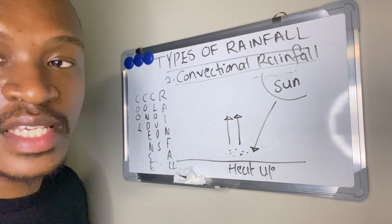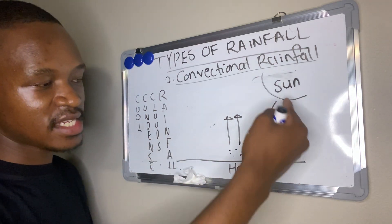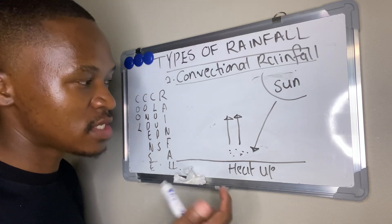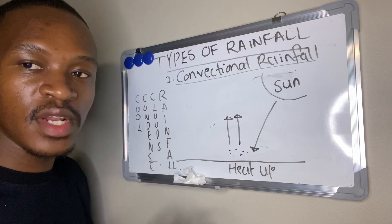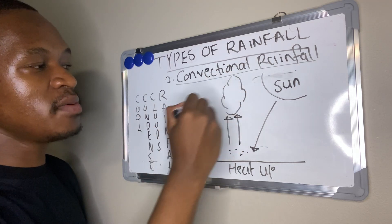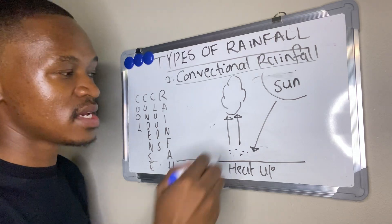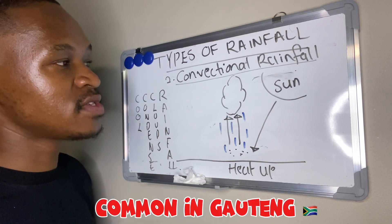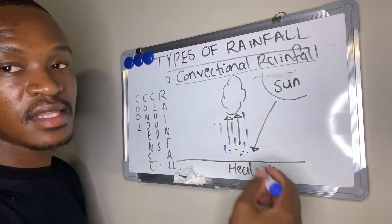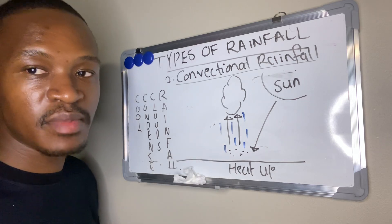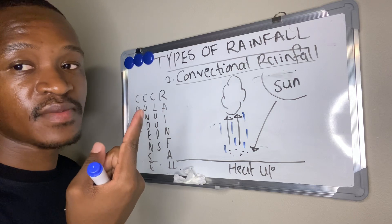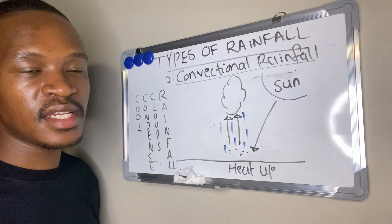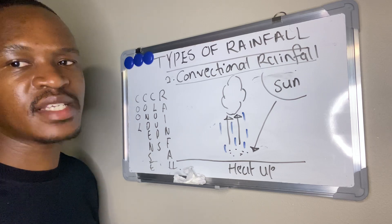For convectional rainfall, it happens when there is high temperature or intense heating of the surface. The ground heats up, and the air in contact with it becomes warm and moist. Once that air is warm and moist, it rises. When it rises, it cools and condenses to form clouds, and clouds bring about the rainfall. This is convectional rainfall — it is the type common in Gauteng. We get this type of rainfall mainly in summer because it requires high temperatures.